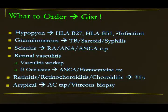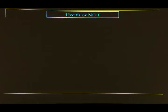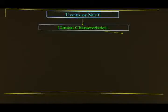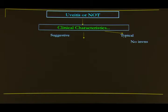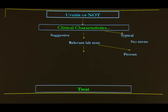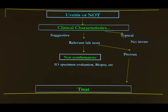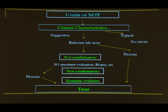Summary approach: first confirm it is uveitis based on clinical characteristics. If typical, no investigation needed. If suggestive, do the relevant lab test. If proven, treat. If not confirmatory, intraocular specimen evaluation and biopsy may provide proof, then treat. If still not confirmatory, look for systemic evidence.